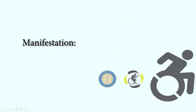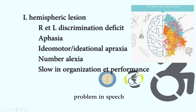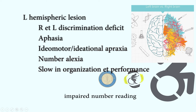Here are the manifestations if the left side of the brain is affected. First is right and left discrimination deficit. Next is aphasia. Third is ideomotor and ideational apraxia. Fourth is number neglect. And slow organization and performance.